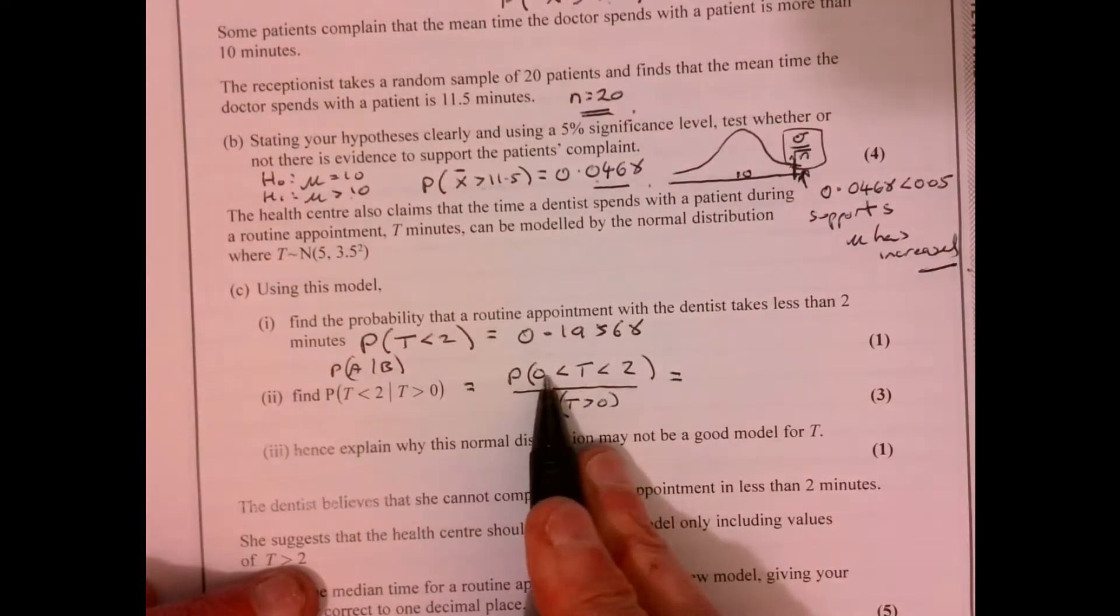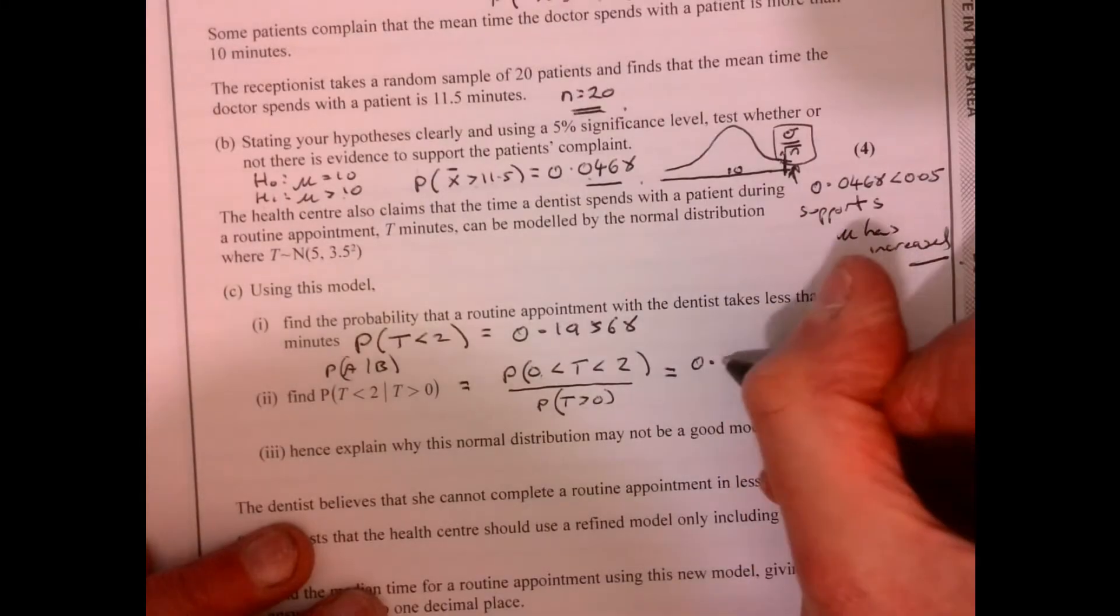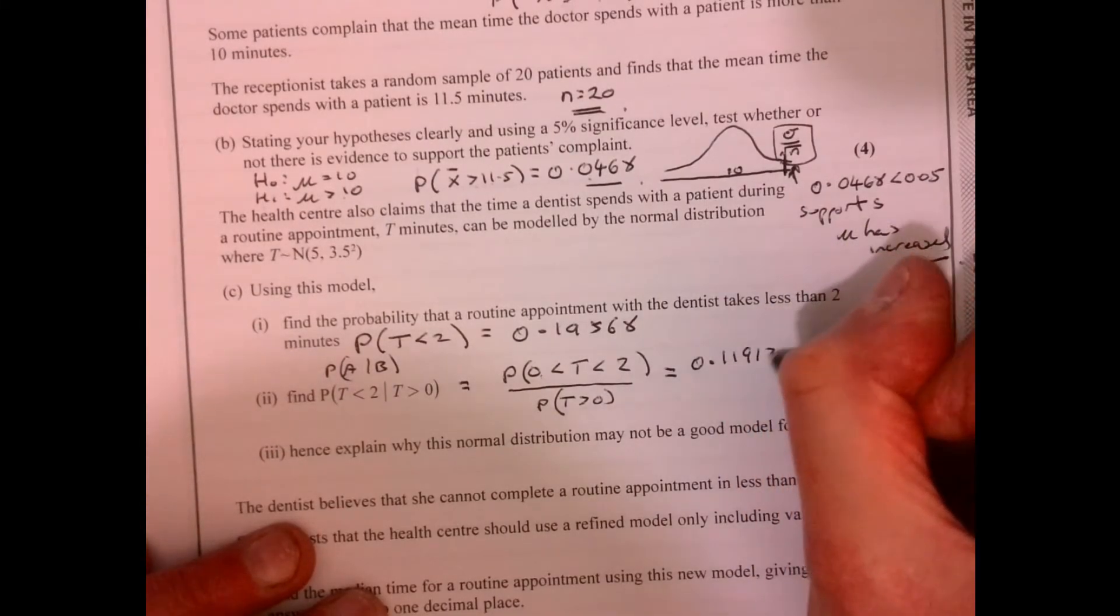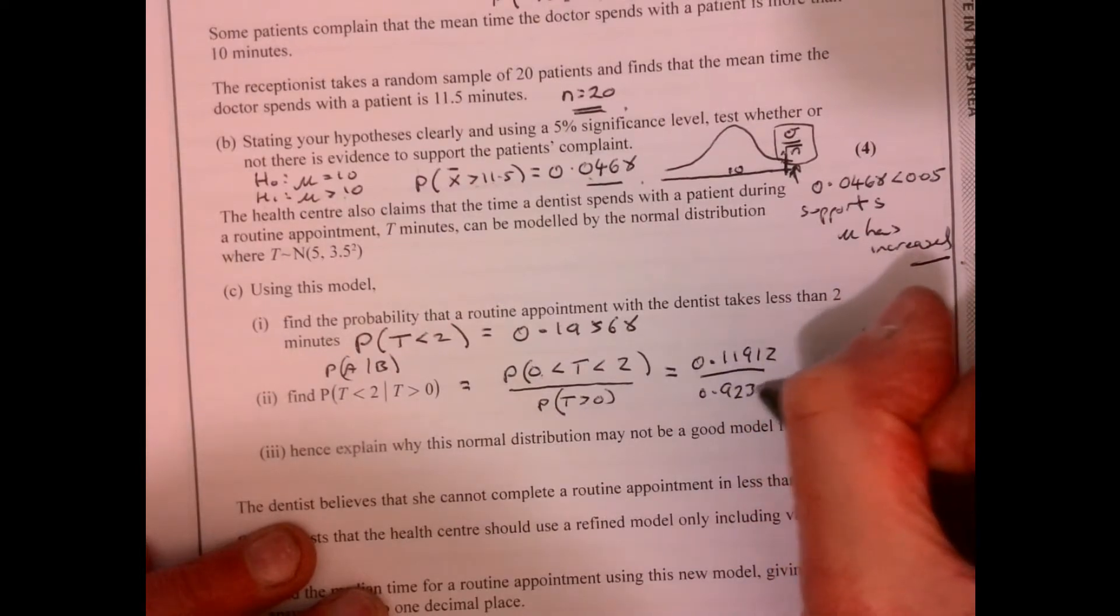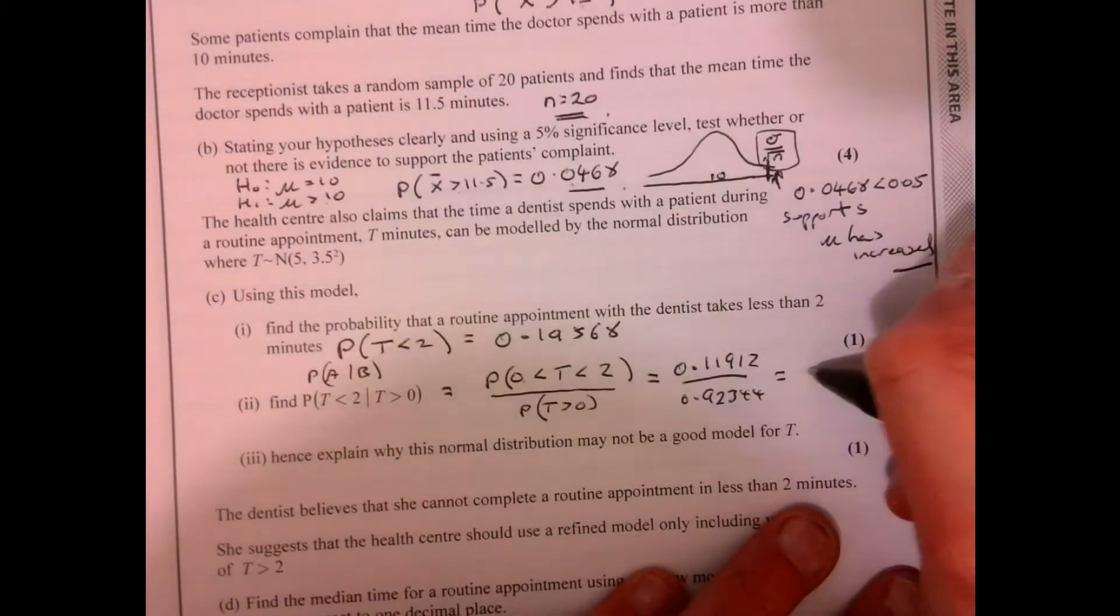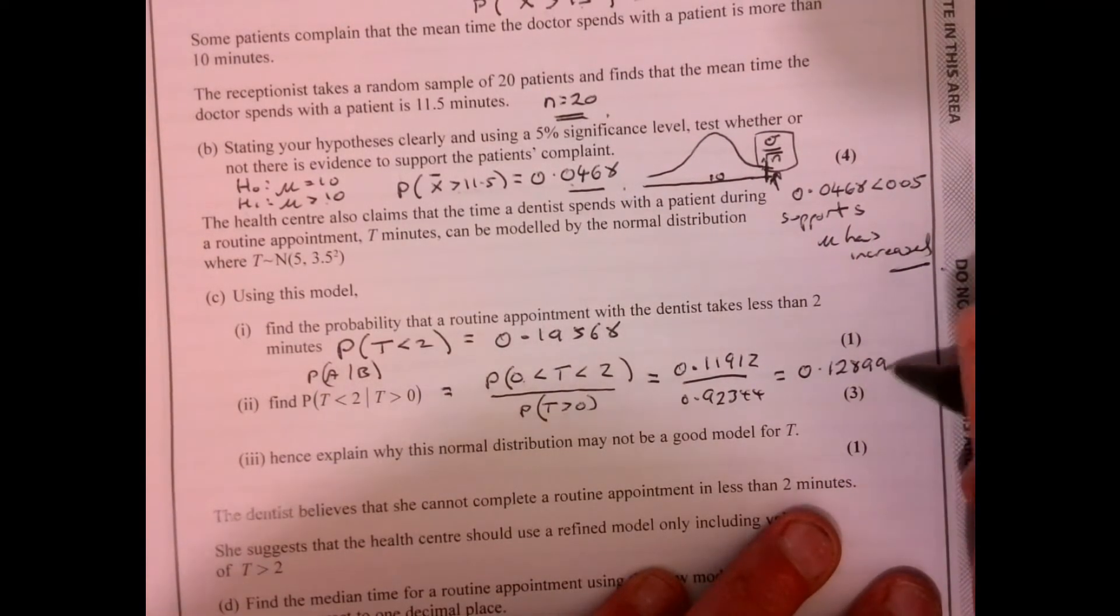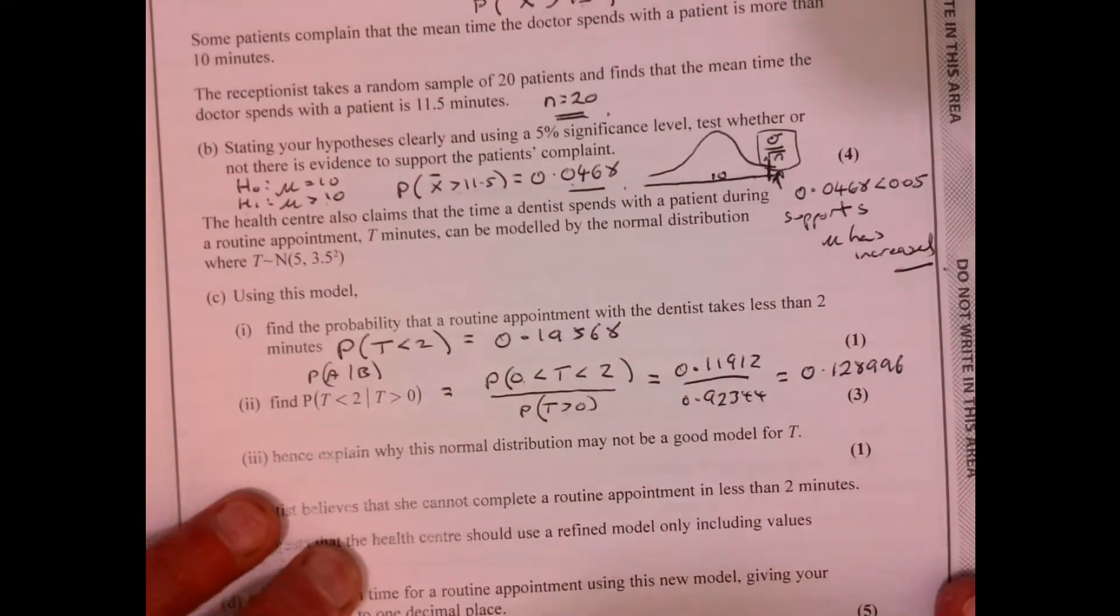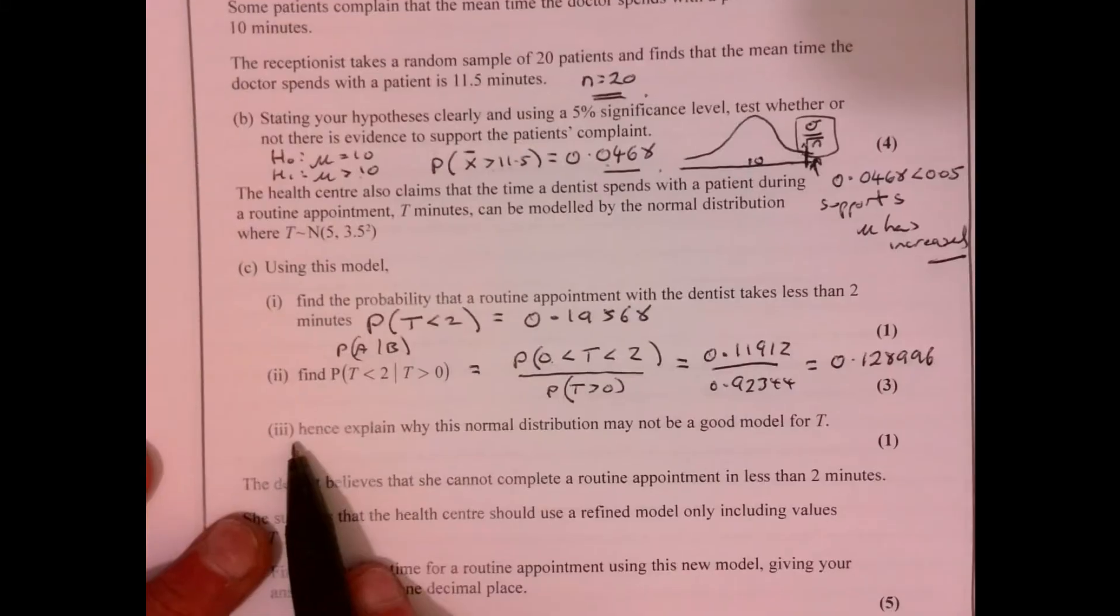So I've got a lower limit. I've got an upper limit. I just put those in. So I'm going to use my calculator to do that. And these are the figures. And if you do that, that gives you 0.128996. Probably gone a bit far there, but it doesn't matter.